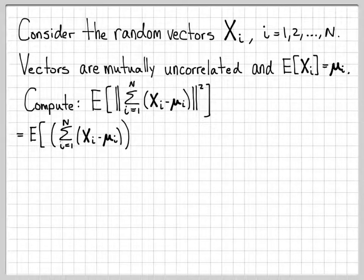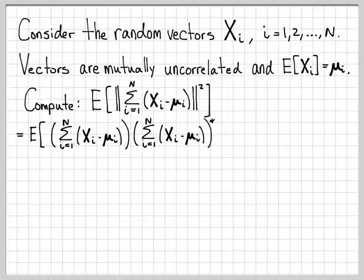Let's do this computation. We can rewrite this. By definition, the norm squared of a vector quantity is equal to the quantity times its complex conjugate transpose. That's what we have right here.